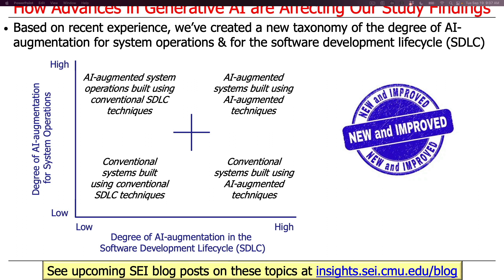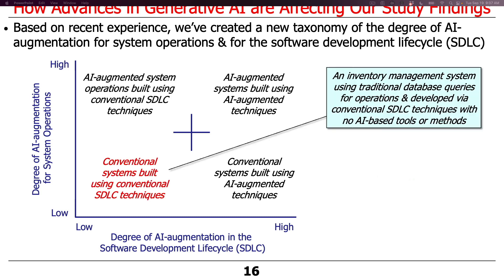The other axis is degree of AI augmentation for system operations — meaning does the system use AI when it's running, not just when we're developing it, but when it's actually operating. Once again, we have a range from low — not using AI at all, which is true of most systems historically — up to very high augmentation. Let's take a look at some examples.